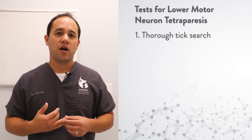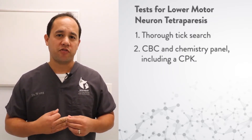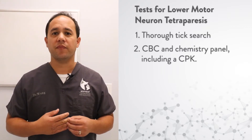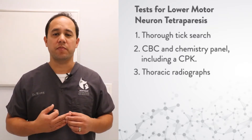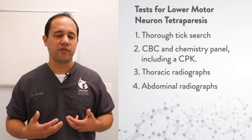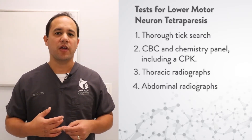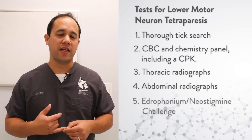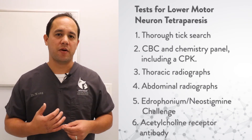Tests for dogs with lower motor neuron tetraparesis include a thorough tick search, blood work including a complete blood count, chemistry panel with a CPK, chest x-rays to look for aspiration pneumonia, megaesophagus, and mediastinal mass, abdominal radiographs to look for evidence of eating dead animals associated with botulism, and potentially a tensilon test or neostigmine challenge, and an acetylcholine receptor antibody.